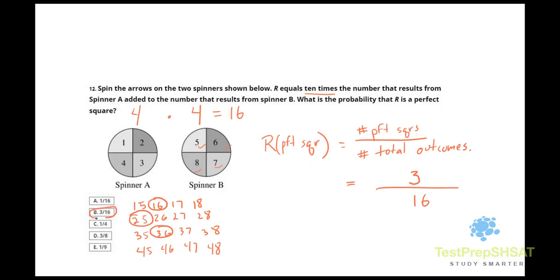The correct answer for the probability that R is a perfect square, and remember this is our list of R's right here, is 3 over 16.